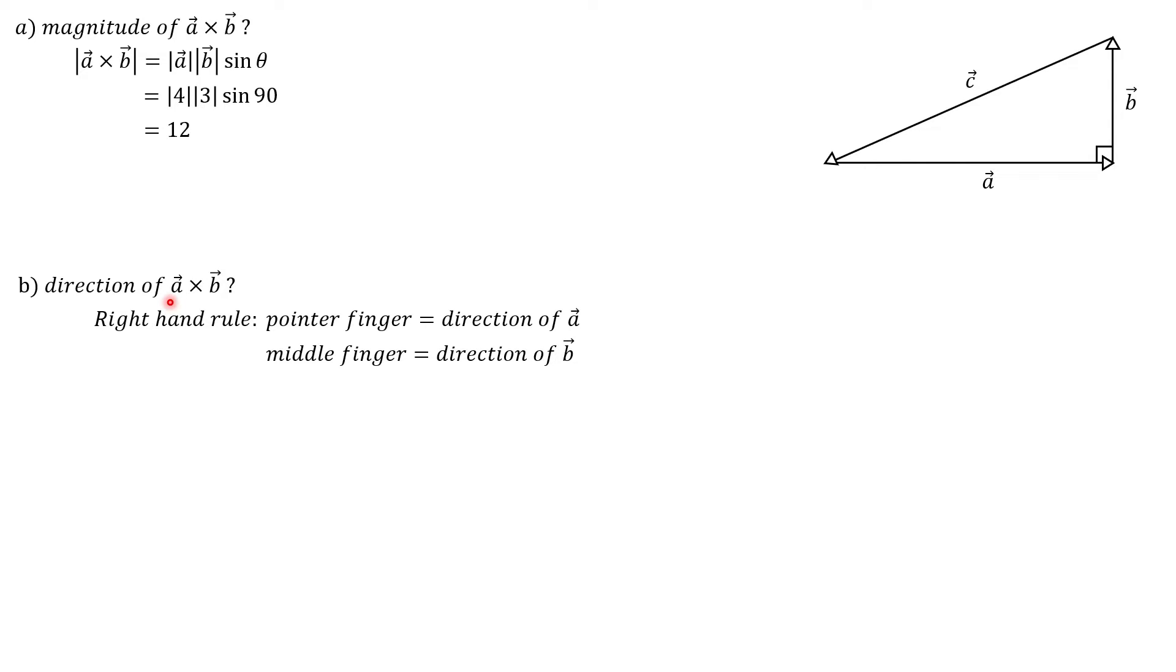And now your thumb should be in the direction of A cross B, and if you have your thumb sticking out, it should be pointed towards you or out of this screen, which is the positive z direction. And that is your final answer for part B.